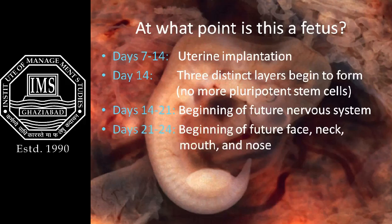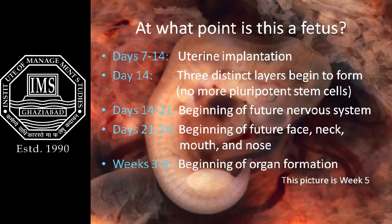After this, the nervous system begins to form — the cells here will eventually become the spinal cord and brain. Bumps begin to develop near the head end that will be the future neck, mouth, and nose. In the next five weeks, parts of the embryo become specialized into primitive organ systems, with the primitive heart starting to beat in week 4.